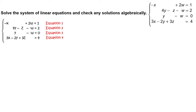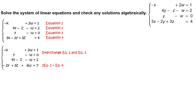Let negative x plus 2w equals 1 be equation 1, 4y minus z minus w equals 2 be equation 2, y minus w equals 0 be equation 3, and 3x minus 2y plus 3z equals 4 be equation 4. Interchange equations 2 and 3, and replace the fourth equation with the sum of 3 times equation 1 and equation 4. The revised system has equations: negative x plus 2w equals 1, y minus w equals 0, 4y minus z minus w equals 2, and negative 2y plus 3z plus 6w equals 7.